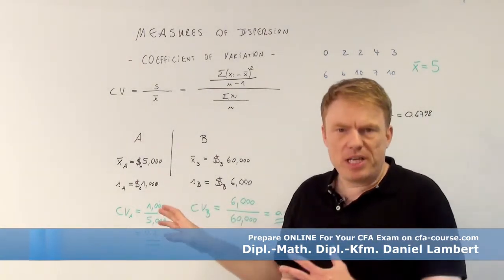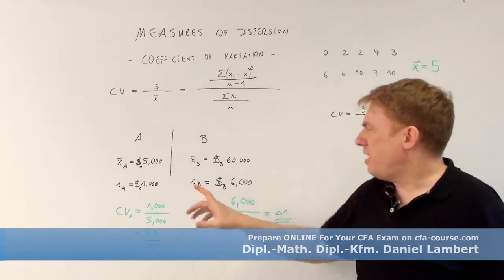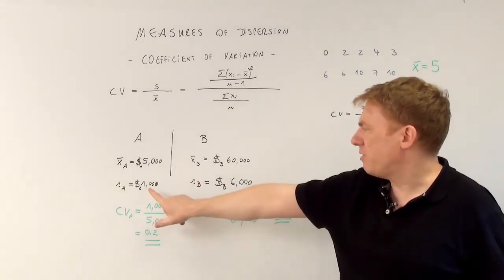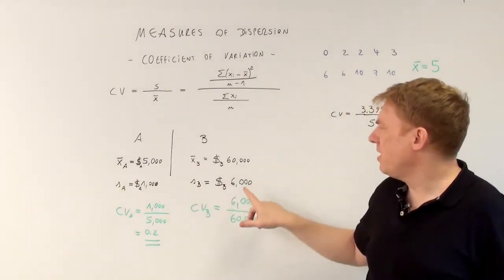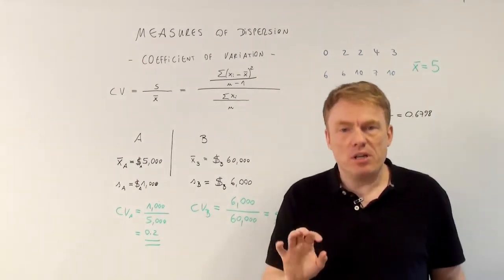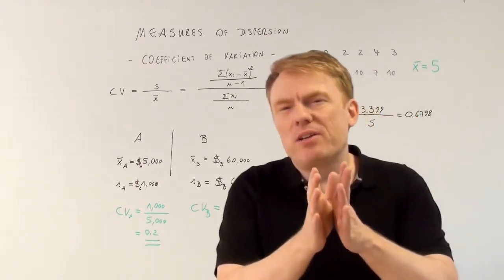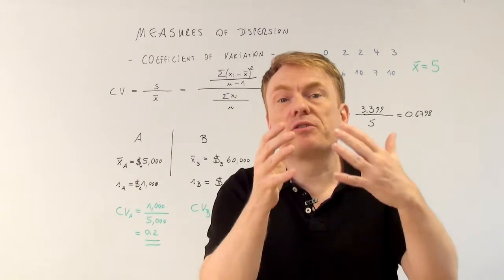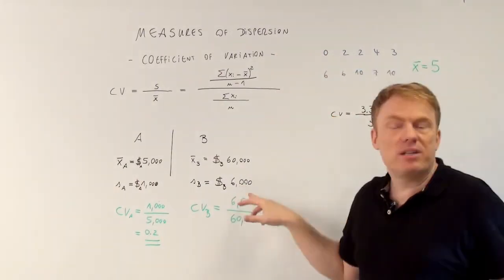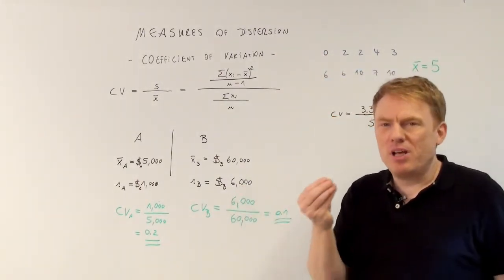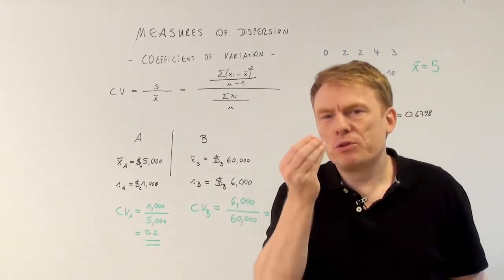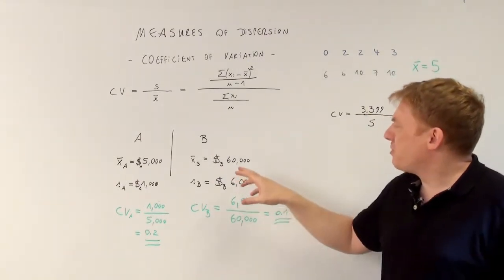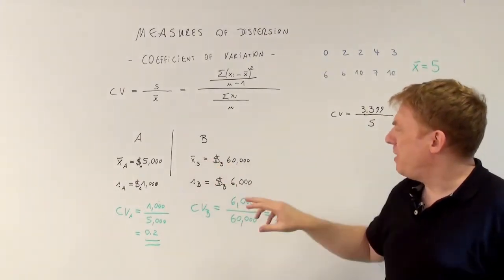Now look at the standard deviations. The standard deviation of country A is $1,000, $1,000 here, $6,000 there. So at first glance, you'd say that the standard deviation, the measure of dispersion, is larger in country B. But the standard deviation should always be looked at as a percentage value of the arithmetic mean.